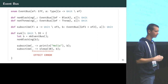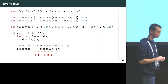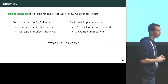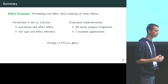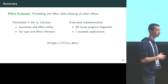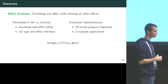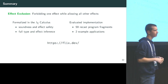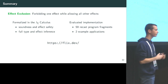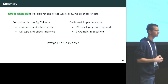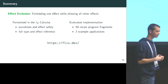In practice, we create a non-blocking event bus and subscribe a function that prints a line — that's allowed — but we cannot subscribe a function that sleeps because that is a blocking operation. To conclude: we've shown effect exclusion as a desirable criterion in many real-world programs — forbidding one effect while allowing all others. We formalized our system in the Lambda Complement Calculus with full soundness and effect safety with full type and effect inference. We evaluated it with 59 programs recast in Flix and provided two example applications. This is an extension to Flix; if interested, find it at flix.dev.